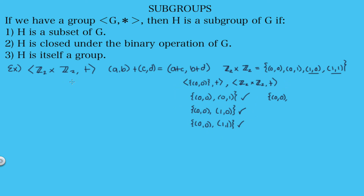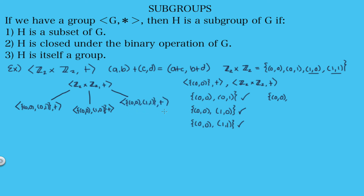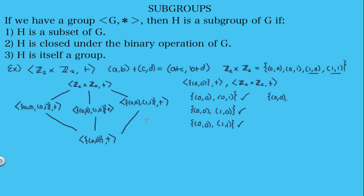Let's write a subgroup diagram for the Klein four-group. On top is our original group ℤ₂×ℤ₂. The three two-element subgroups — {(0,0),(0,1)}, {(0,0),(1,0)}, and {(0,0),(1,1)} — are none of them subgroups of one another, so we can't have a straight chain. Instead, the original group branches down to all three subgroups, and each of those connects down to the trivial group at the bottom. That's the complete subgroup diagram.